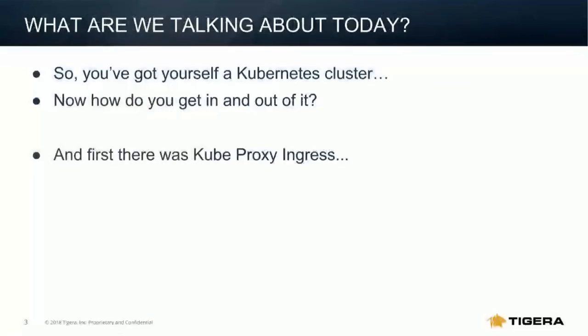Thank you, Michael. This is a second part of a webinar I started last session. The last webinar talked about services and how you get in and out of your Kubernetes cluster. You've now got a wonderful Kubernetes cluster — it's stood up, it's protected, you're running network policies. But how do you make your services available to external resources, external users, external services? And just as importantly, how do your pods and services reach out of the Kubernetes cluster and connect to external services? That's what we're going to spend time talking about today.